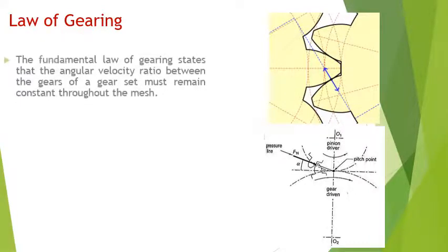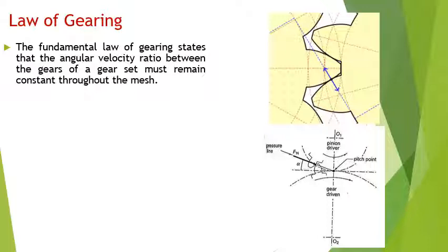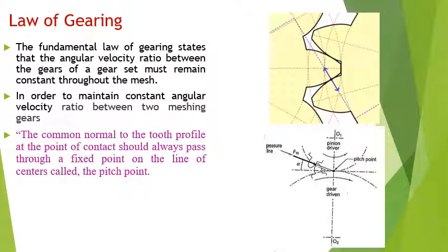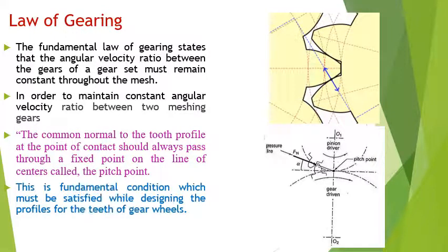Coming to the law of gearing, the fundamental law of gearing states that the angular velocity ratio between a pair of gears must remain constant throughout the mesh. In order to maintain this constant angular velocity ratio, the common normal to the tooth profile at the point of contact should always pass through a fixed point on the line of centers called the pitch point.